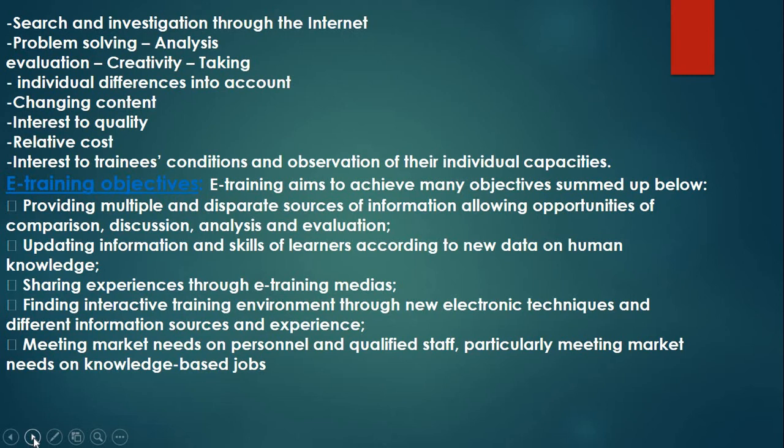While traditional training has the trainer as the primary source, with one-way information flow, e-training provides two-way information flow between trainer and trainee. Friends can interact together during an online course and ask each other different questions. Collaborative training involves the trainee learning through practice, self-search, and investigation through the internet, with problem solving being one of the key strengths of e-training.